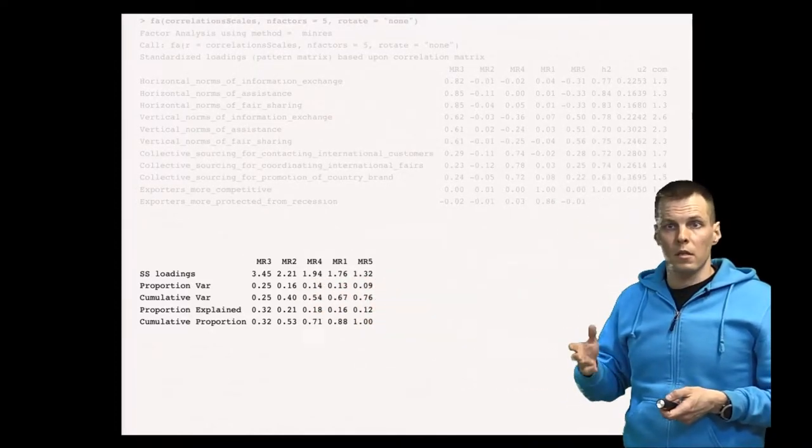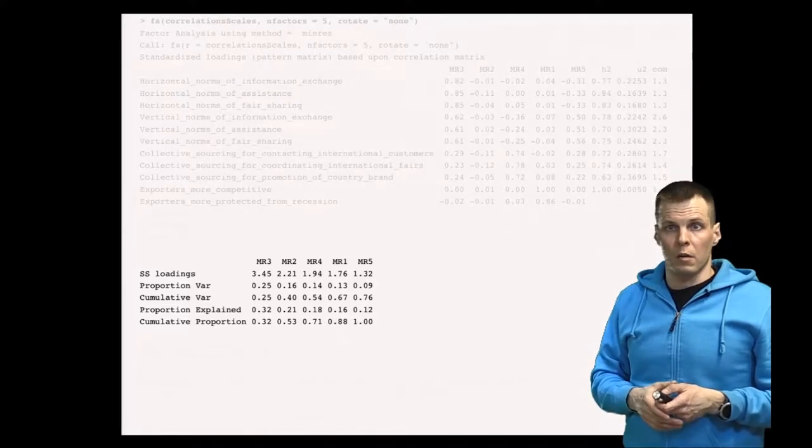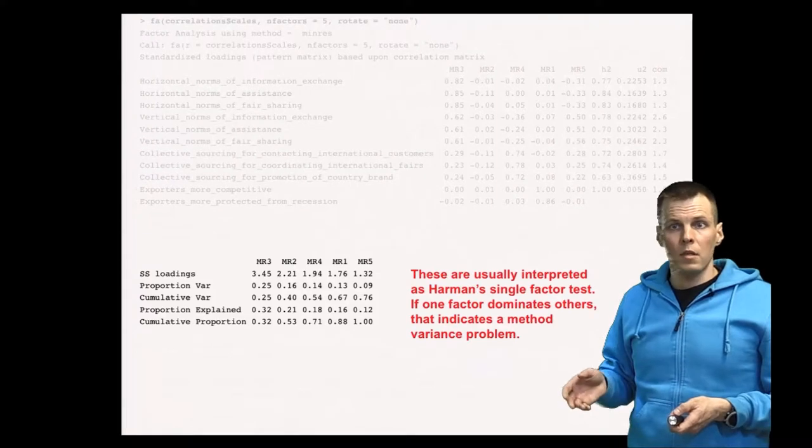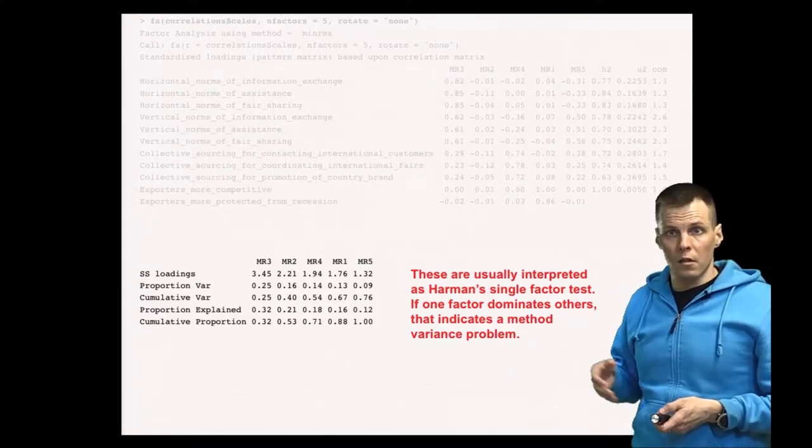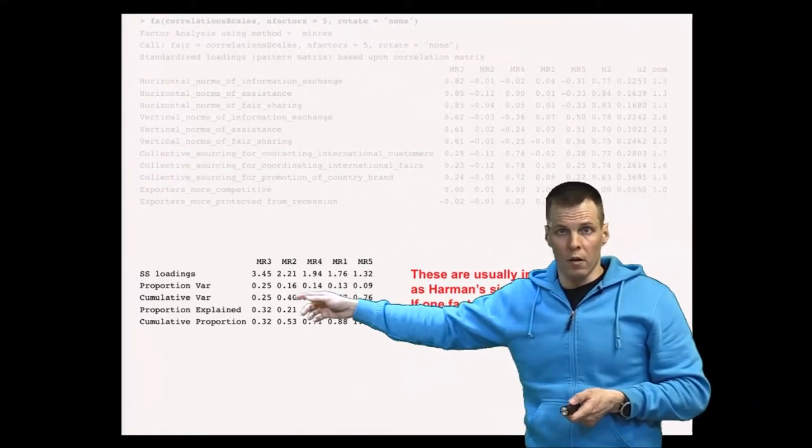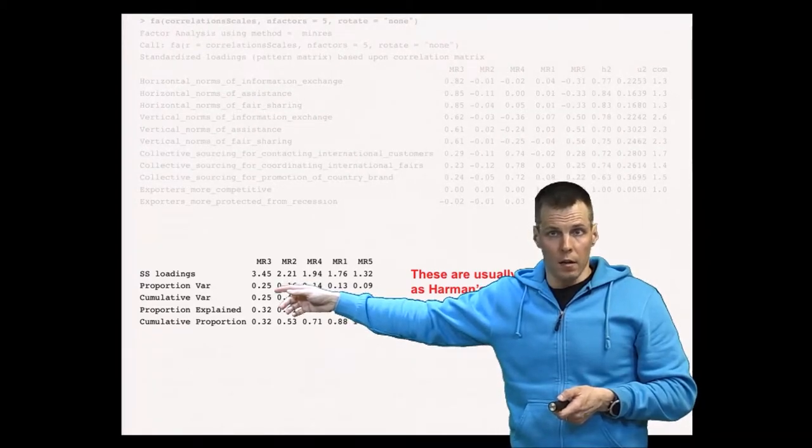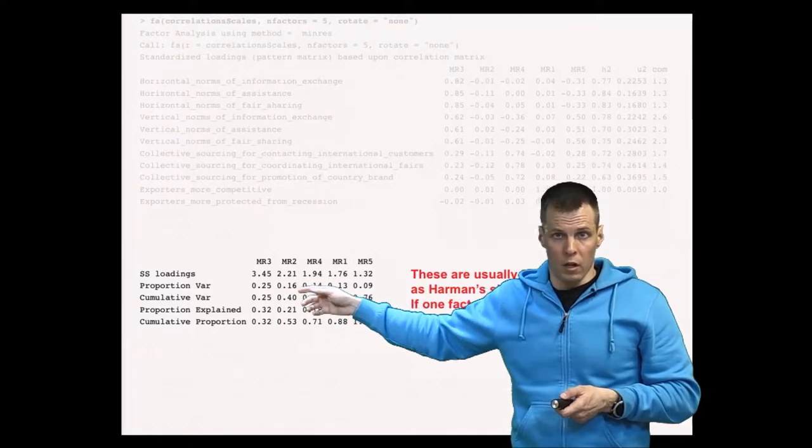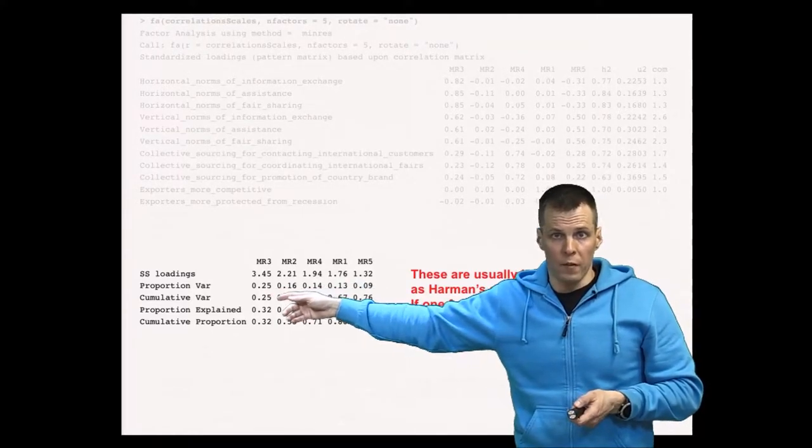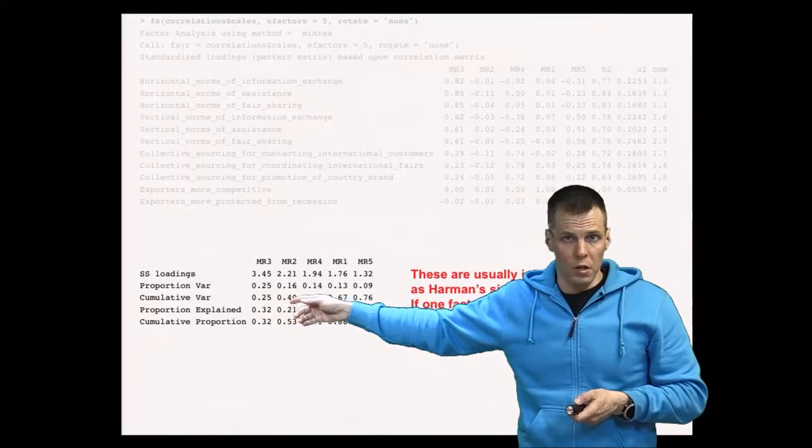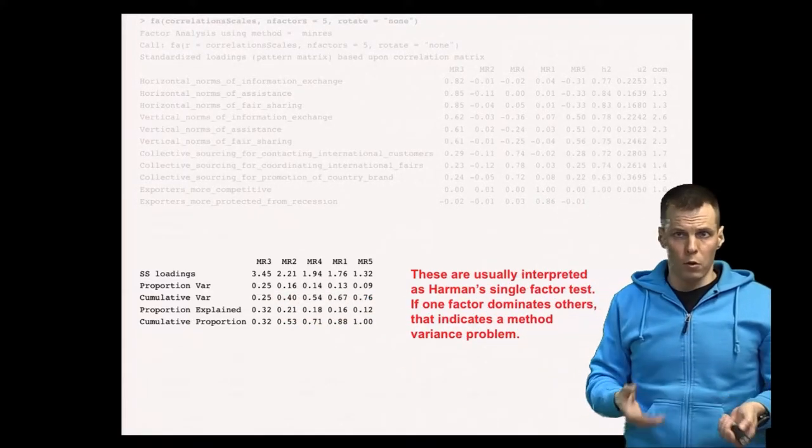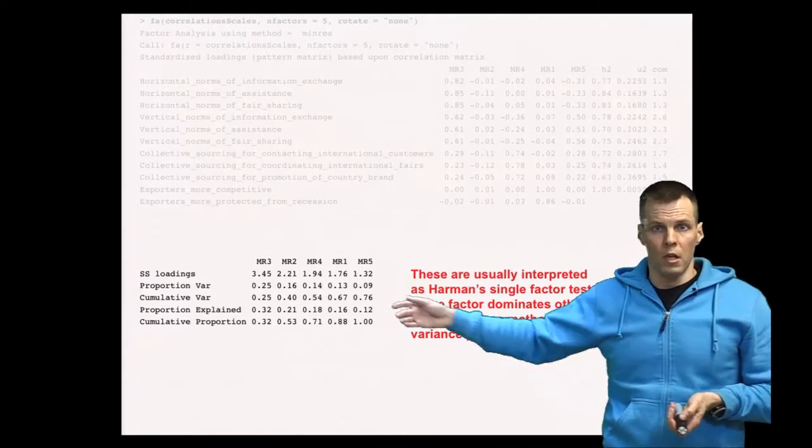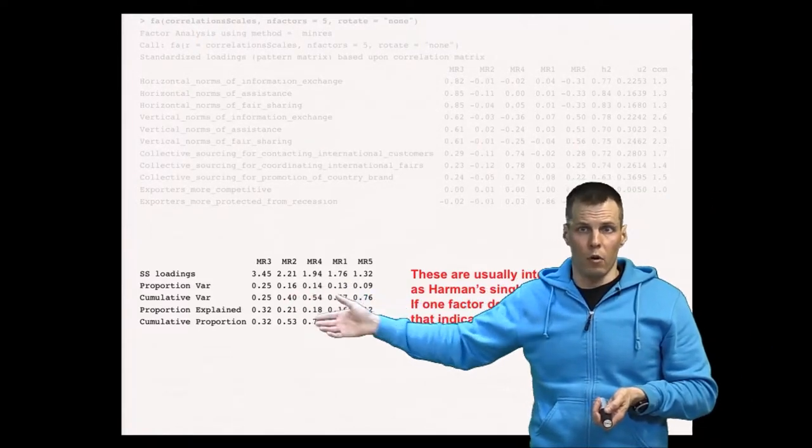The variance explained here shows that the first factor explains most of the variation, but this is an unrotated solution so we don't really pay much attention to this except for one thing. We can do a Harman single factor test, which you sometimes see reported in papers. The Harman's test involves checking whether the first factor explains a majority of the variation in the data and whether it dominates over the other factors. So we can see here the first factor is 25 percent, the second factor is 16 percent. We can't say that the first factor would explain most of the data; we can't say that it dominates over the other factors because 25 and 16 percent are still in the same ballpark.